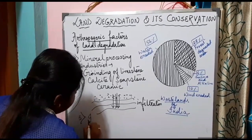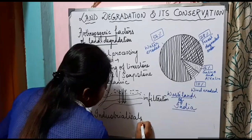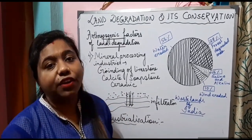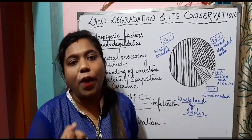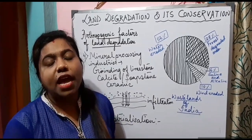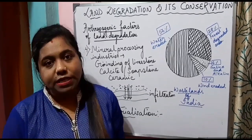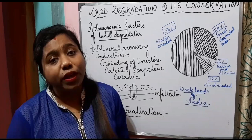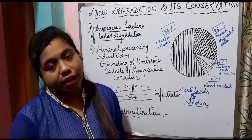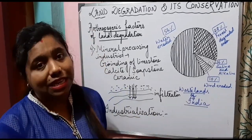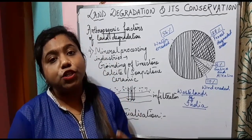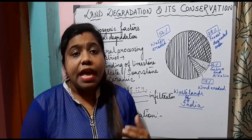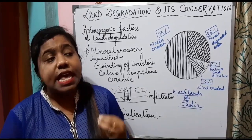The fifth major human factor leading to land degradation is industrialization. After independence, industrialization became a major cause of land degradation. Due to industrialization, solid waste is dumped on land, reducing its fertility. Industrial effluents that are not treated are released directly into water bodies, leading to water degradation as well as degradation of nearby land. To summarize, the anthropogenic factors that cause land degradation are: mining and quarrying, over grazing, over irrigation, mineral processing industries, and industrialization.